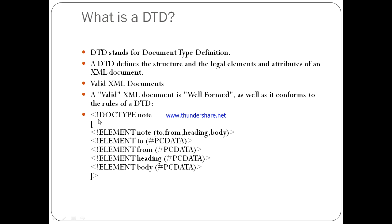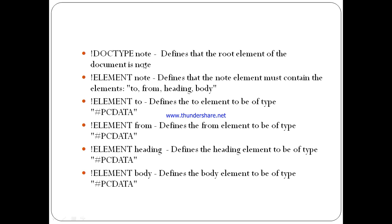Let's write an exclamation sign, then DOCTYPE and NOTE. Open the brackets. This is the element NOTE containing to, from, heading, and body. I am going to describe what is happening here. First of all, we have DOCTYPE NOTE, which defines that the root element of the document is NOTE. The element NOTE defines that it must contain the elements to, from, heading, and body.